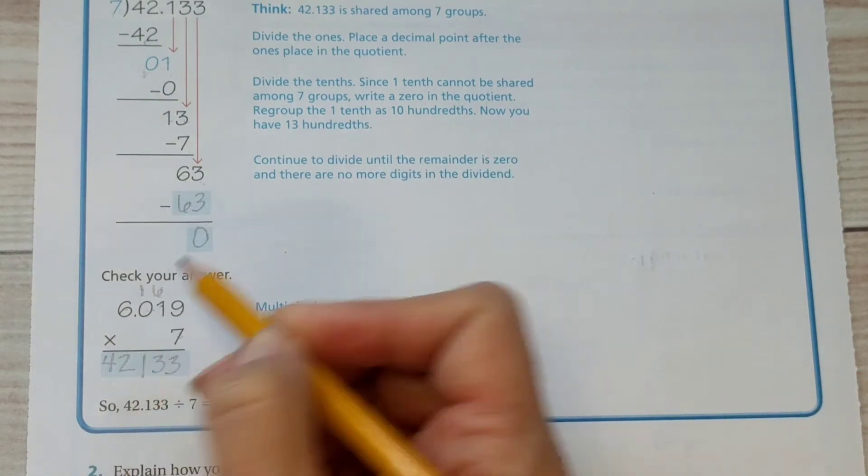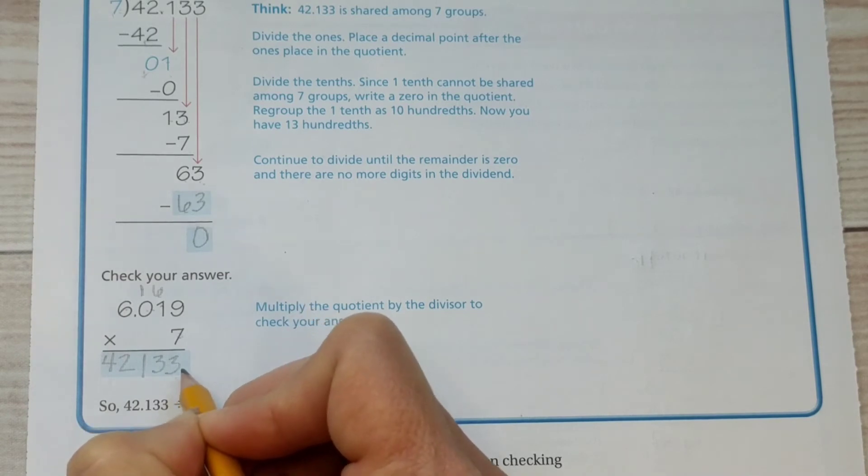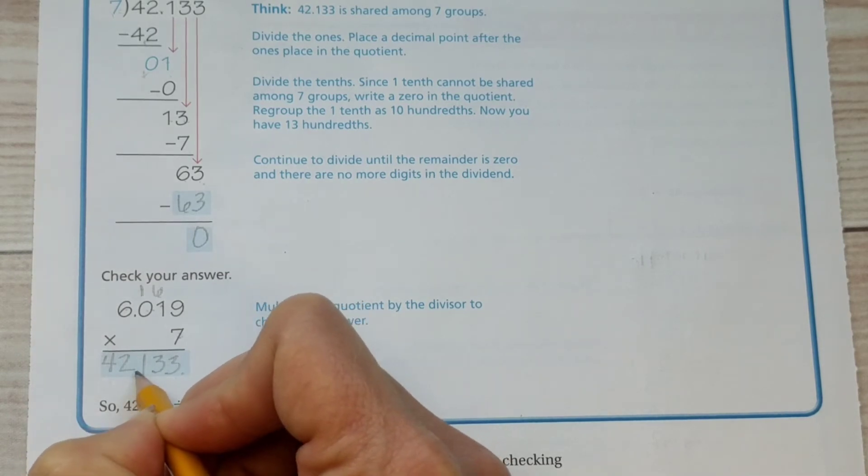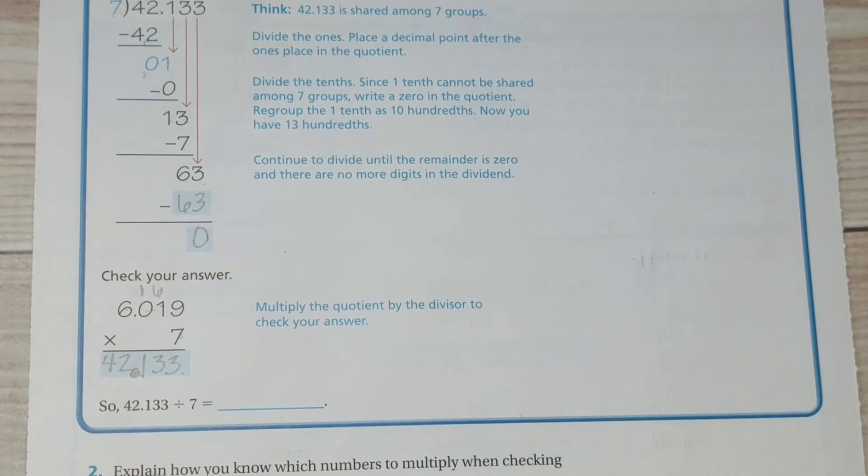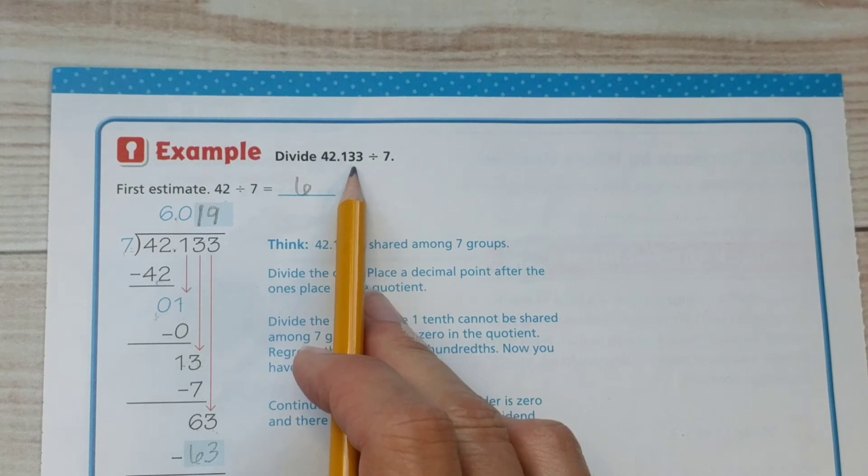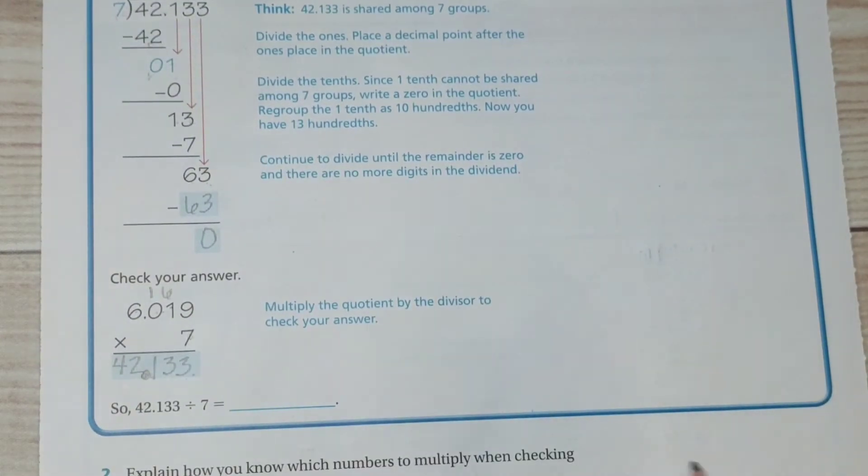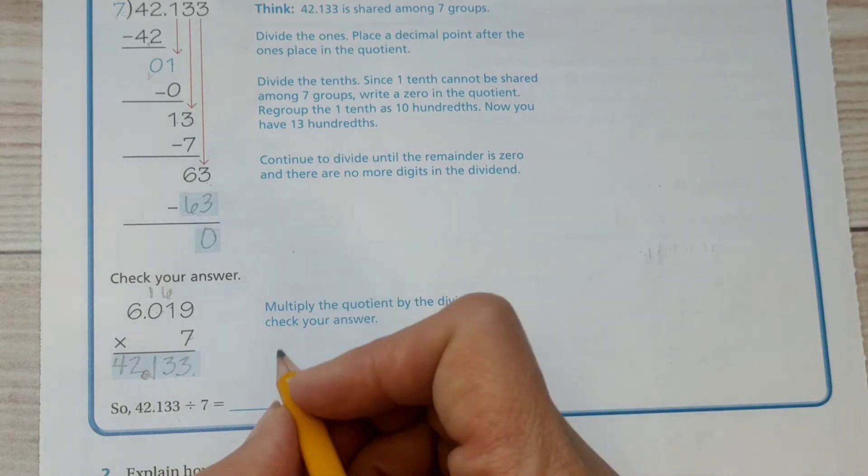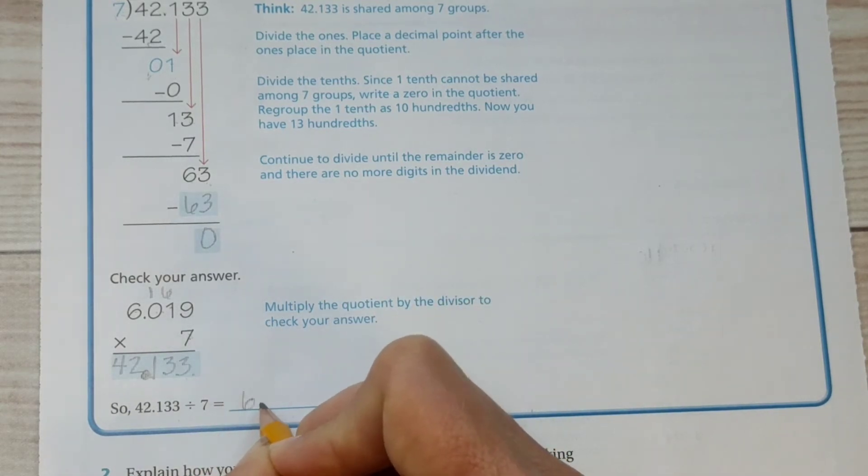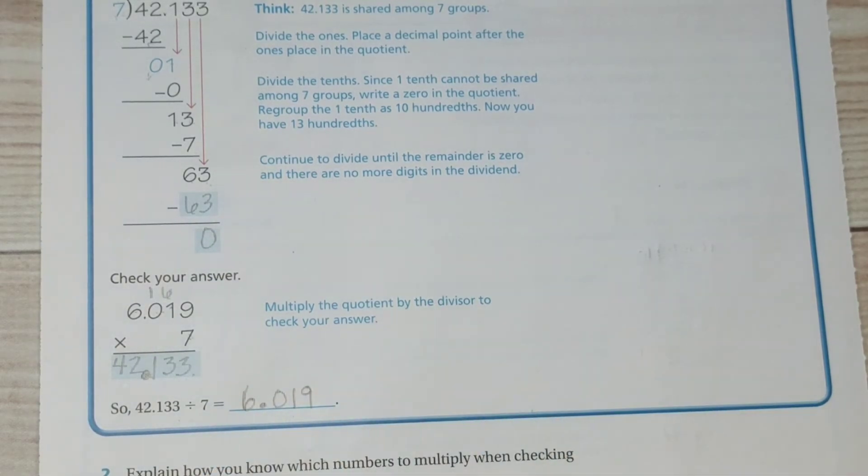Now where does that decimal go? Well, there's one, two, three digits behind the decimal, so I have to make sure there's one, two, three digits behind the decimal in the answer. And that's where the decimal goes. And since that was our original problem, we've done the division problem correctly. So, forty two and one hundred thirty three thousandths divided by seven is six and nineteen thousandths.